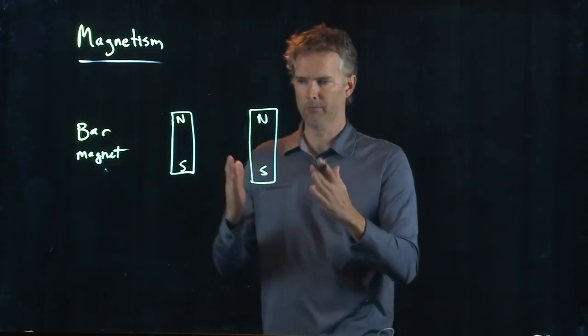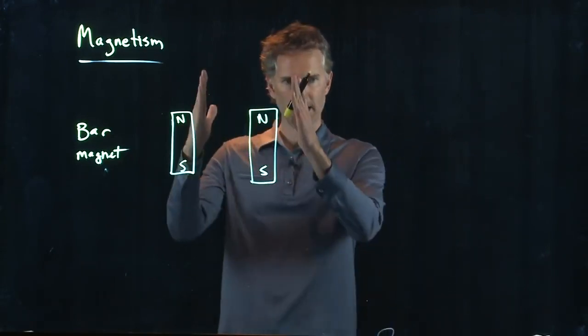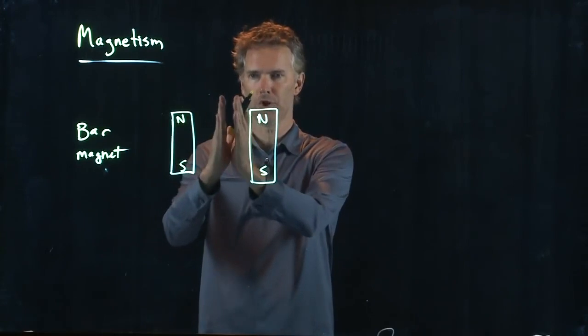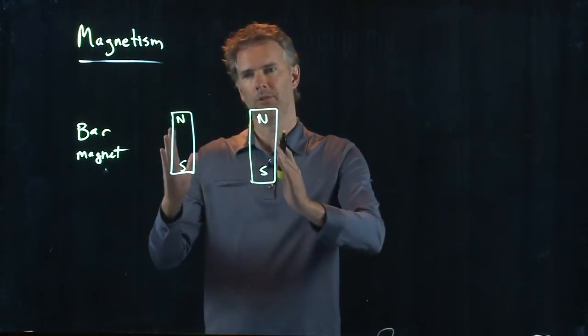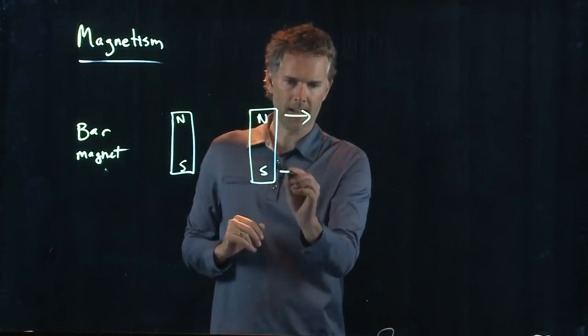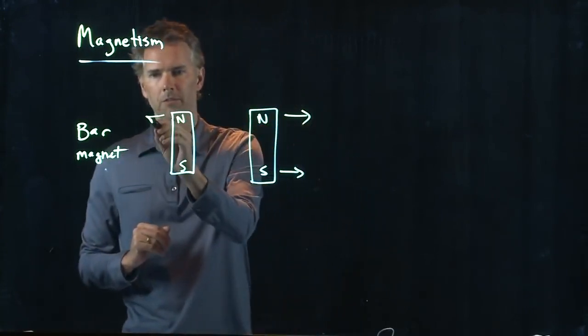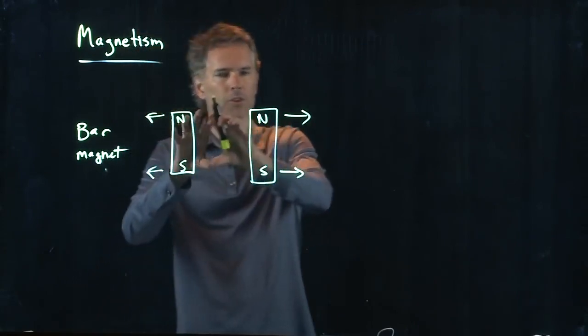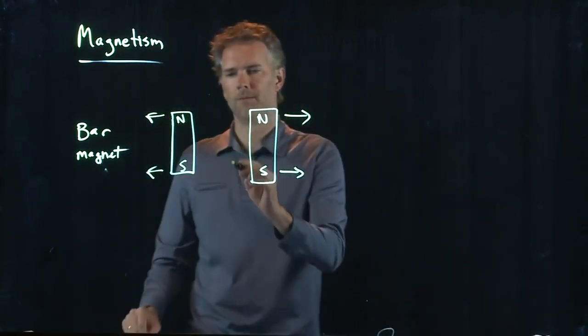What is going to happen? You've probably done this experiment. If I take two magnets, and I try to push the north poles together, and I try to push the south poles together, they push apart. There is a repulsive force, F, which is pushing them apart. Okay?